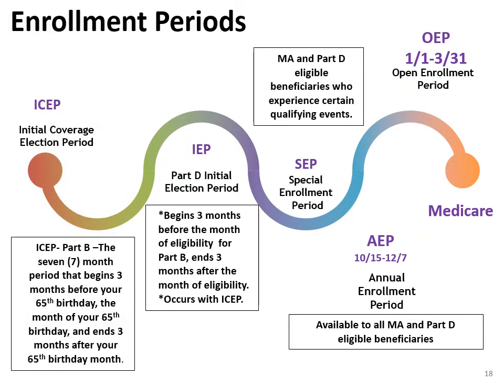There are five Medicare enrollment periods to be aware of. Number 1: ICEP, the Initial Coverage Election Period, is your initial enrollment into Medicare Part A and B. It begins three months before your 65th birthday, includes the month of your birthday, and extends three months after. If you work and have creditable health coverage and wait to enroll in Medicare at age 66 or older, when you leave your creditable coverage you have 63 days to enroll in Medicare or pay a 10% Part B penalty.